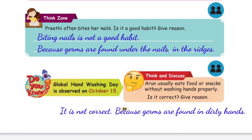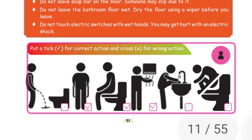Think and discuss: Ansu usually eats food or snacks without washing hands properly. Is it correct? Give a reason. No, it is not correct because germs are found in dirty hands. Next, put a tick for correct action and a cross for wrong action. Look at the picture properly and put the correct symbol.